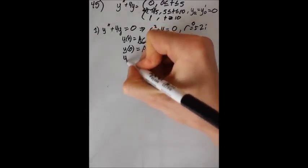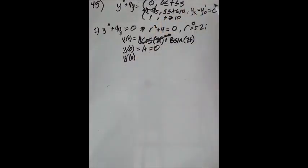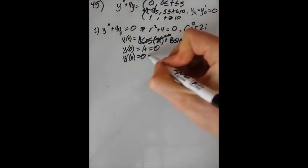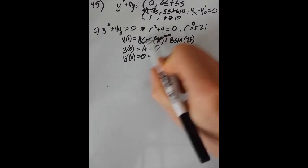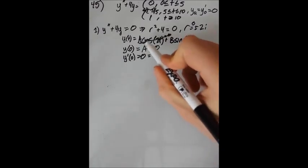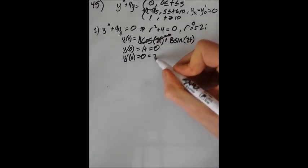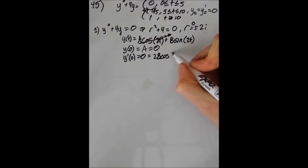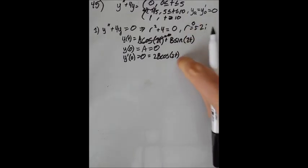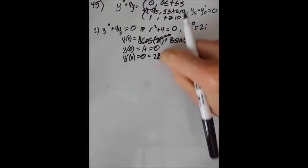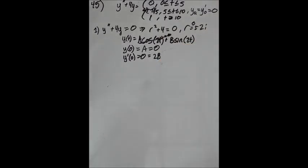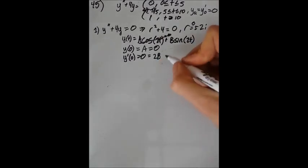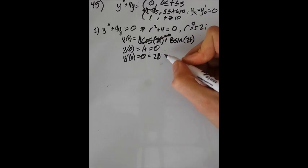And now y prime of 0, as we can see here, is also 0. And so if we take the derivative of this, we don't have to worry about this term anymore, because we know that a is 0. The derivative of this is 2b cosine 2t. And when t is 0, that removes all this. Cosine,